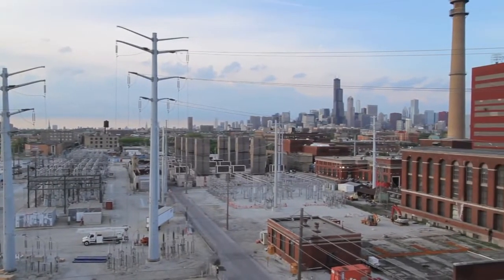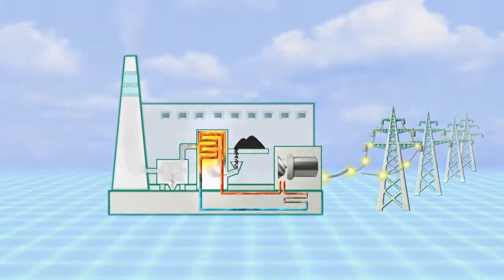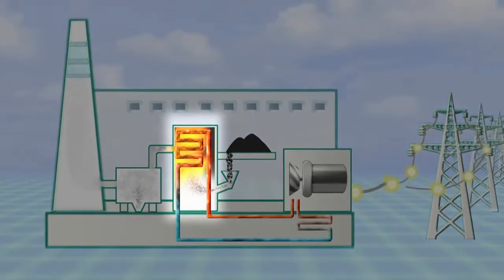Traditional coal-fired power plants like Fisk and Crawford have two basic components. The first is a furnace boiler, designed to burn coal and capture the resulting heat energy using a system of circulating water and steam.